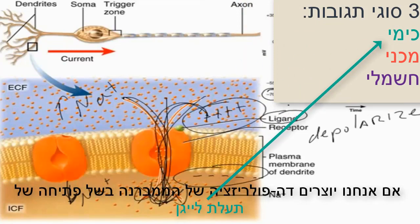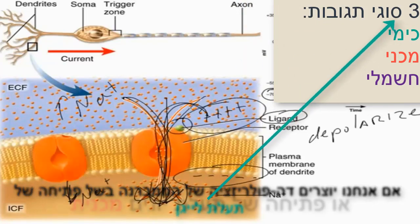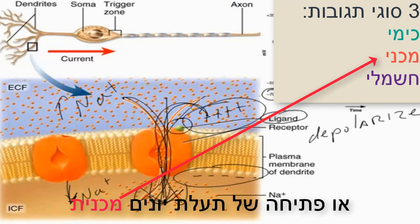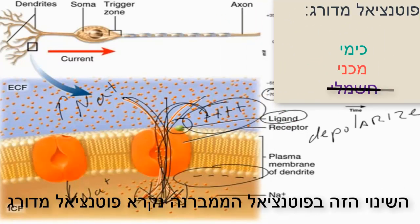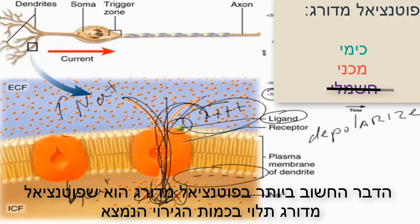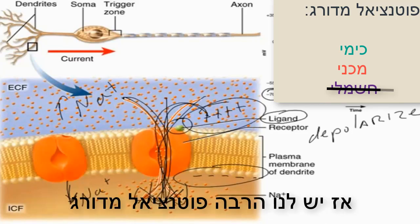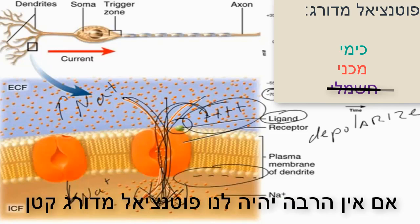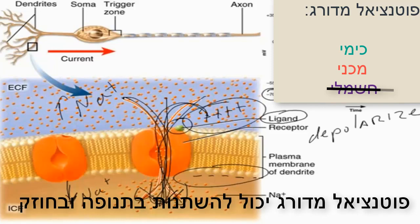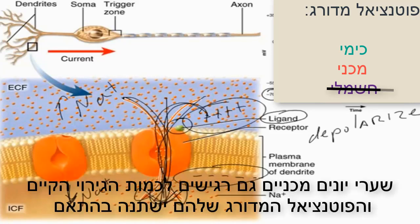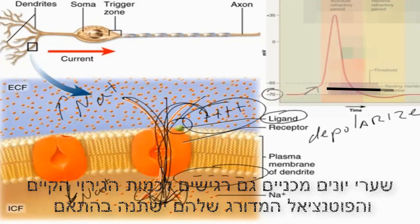If we depolarize the membrane because a ligand-gated ion channel opens or a mechanically-gated ion channel opens, that change in membrane potential is called a graded potential. The important thing about graded potentials is that they are dependent upon how much stimulus is present. If there's a lot of ligand available and many ligand-gated ion channels open, you'll have a large graded potential. If there's not much stimulus, you'll have a small graded potential. Graded potentials can vary in amplitude or strength. Mechanically-gated ion channels are also susceptible to the amount of stimulus present, and their graded potentials will be variable.